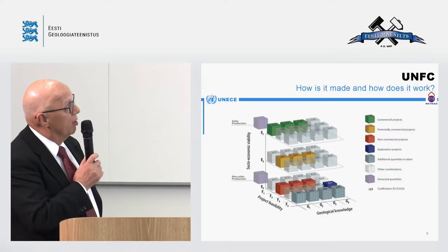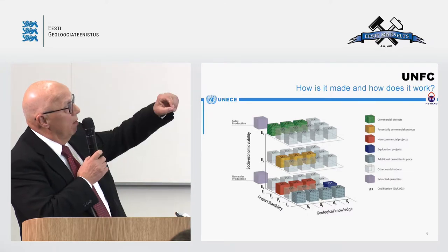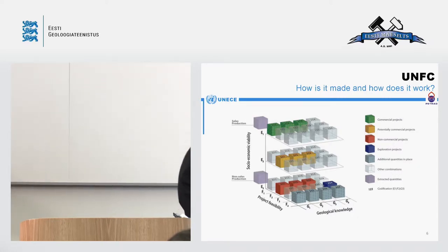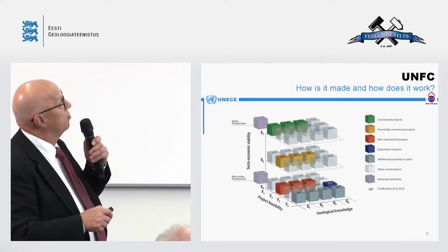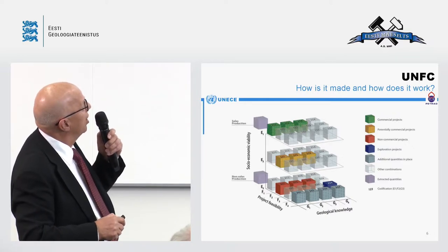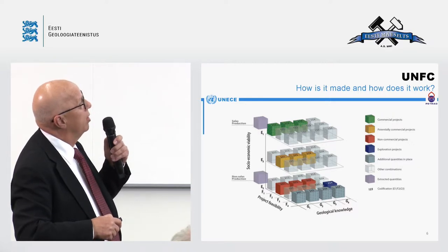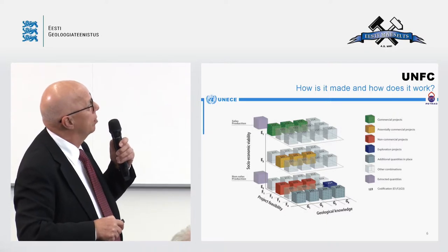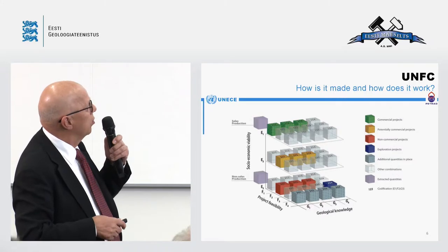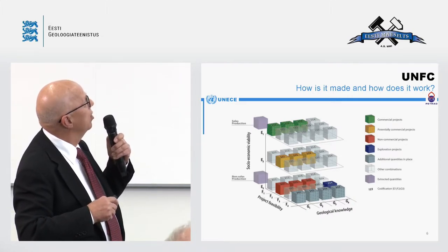The classification itself looks complex if you haven't seen it before — it's a three-dimensional system with many boxes. The different colored boxes represent the different classes. The green ones are commercial projects — in other classifications these would be called reserves. The yellow ones are potentially commercial projects. We have non-commercial projects and exploration projects. The light blue represents what is left in the ground when you start a project — outside the value chain. The main objective is to move resources up the value chain to start producing, through the pink production boxes.